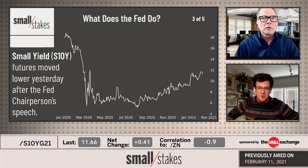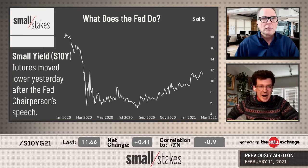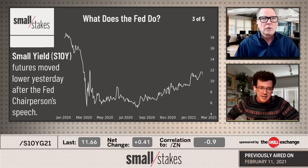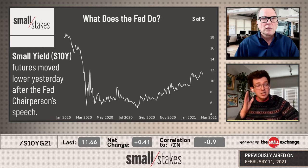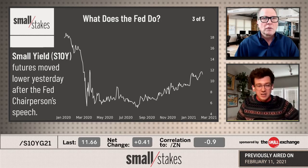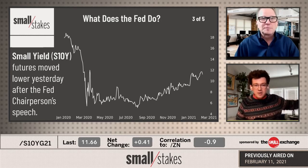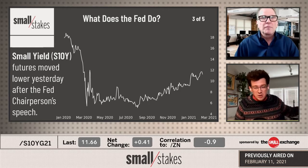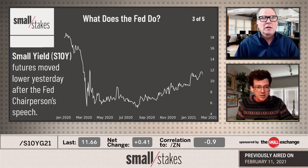Immediately, people come in and kill the 10-year yield — they buy up treasuries thinking what Powell says directly translates to the long-term market. It does to a degree, but when you're separating the overnight lending rate from 10 years of duration in interest rates, you've got totally different beasts. And the move is almost completely reversed today.